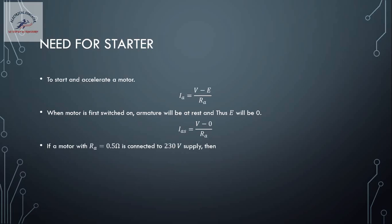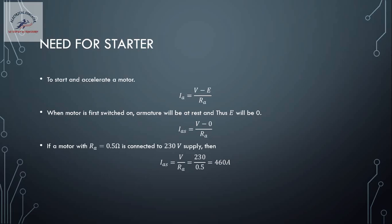Let us take an example. Consider a DC motor whose armature resistance is 0.5 ohms connected to a 230-volt supply. With the motor at rest and back EMF zero, the starting current = 230 / 0.5 = 460 amperes. This is a very large current, and this amount of current flowing in a small 230-volt motor is very dangerous — it can damage the armature and burn the windings. It is therefore necessary to limit the starting current to the maximum permissible value, and starters are used for this.